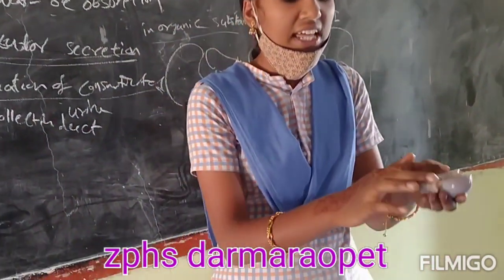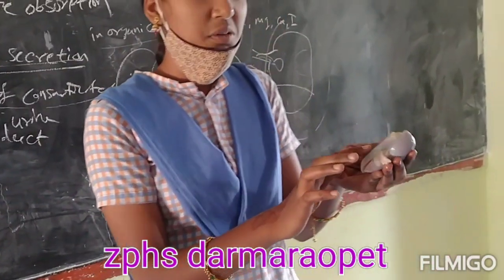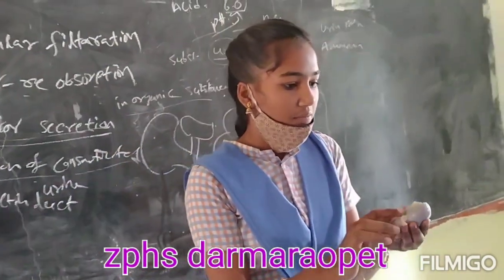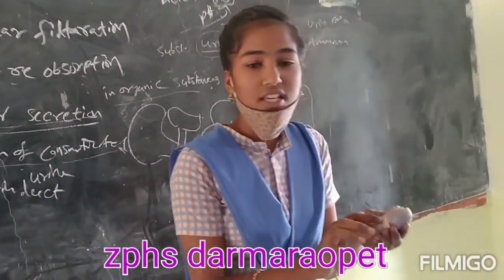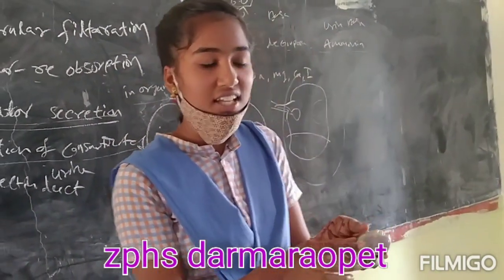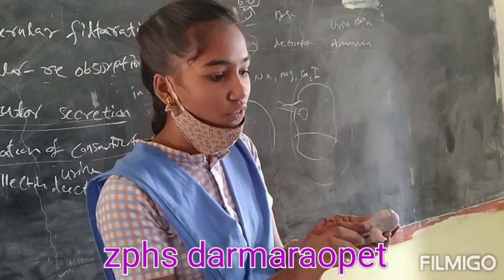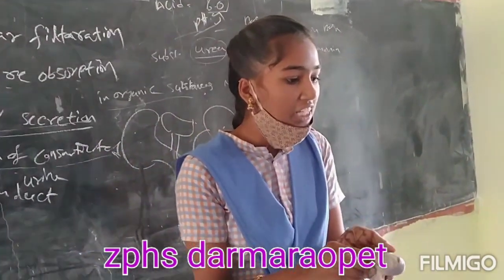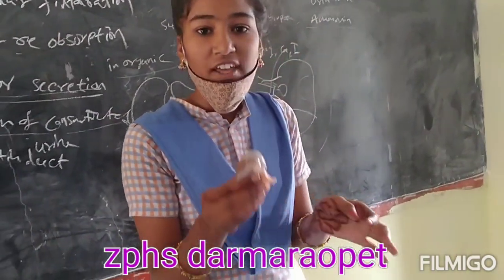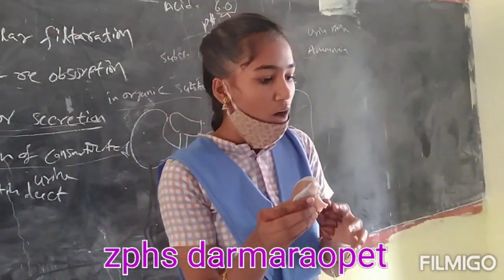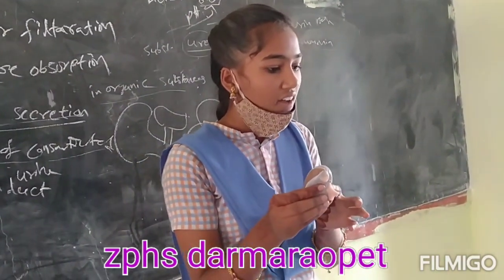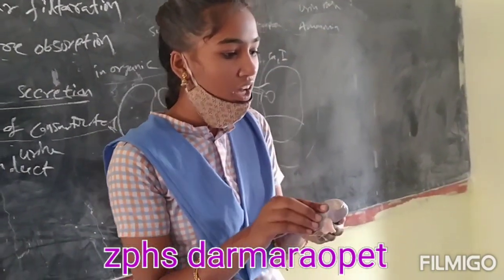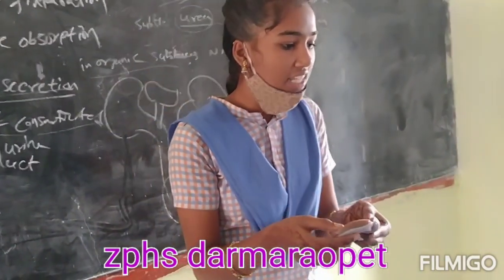The length is 10 centimeters. Breadth is 5 to 6 centimeters. The thickness is 4 centimeters. Each kidney is convex on the outer side and concave on the inner side.